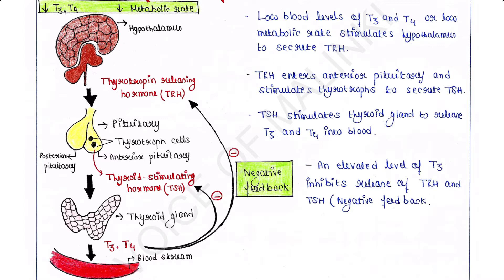Low blood levels of T3 and T4, or low metabolic rate, stimulate the hypothalamus to secrete thyrotropin releasing hormone, or TRH. TRH enters the hypothalamic hypophysial portal system and flows to the anterior pituitary, where it stimulates thyrotroph cells to secrete thyroid stimulating hormone, or TSH.